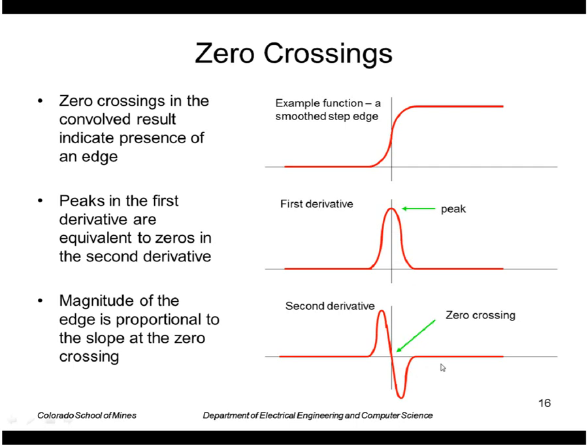So we can detect edges by just detecting the locations of transitions from positive to negative or negative to positive. And we can also estimate the magnitude of the edge by looking at the slope of the output of the second derivative operator on the image.